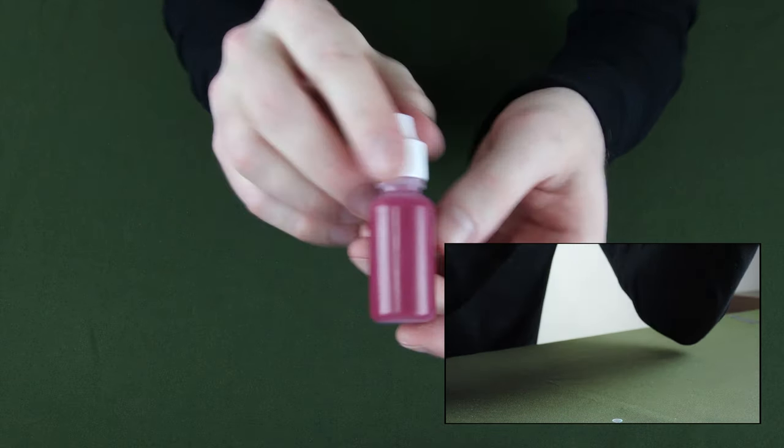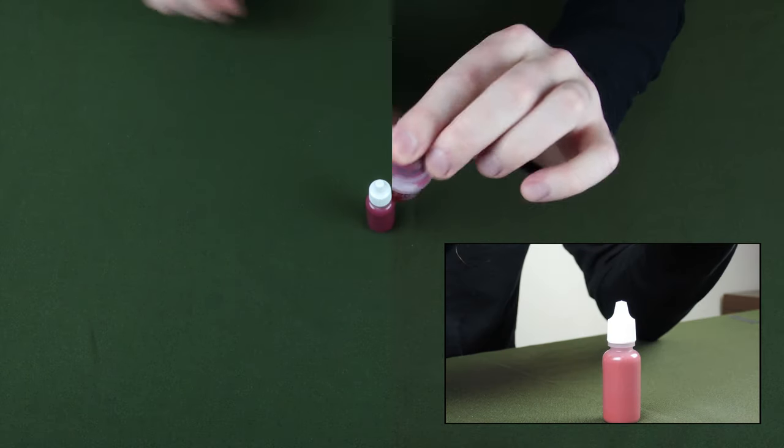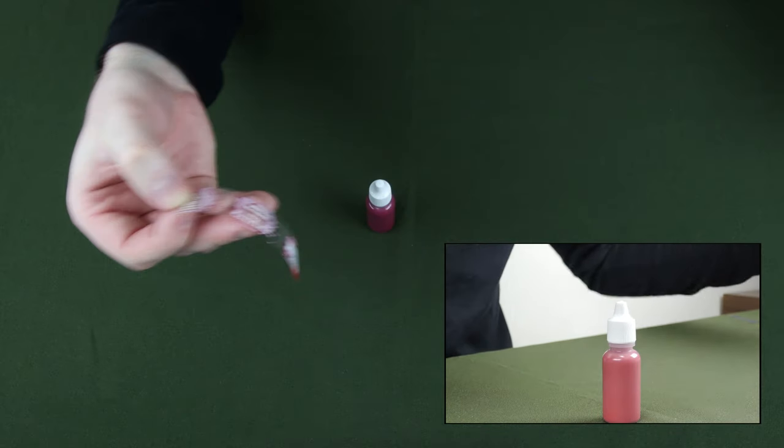A quick rinse under the faucet will remove remaining paint from the funnel and make it ready for use again. If you want to keep the paint label, you can simply peel it off and re-stick it to the dropper bottle.